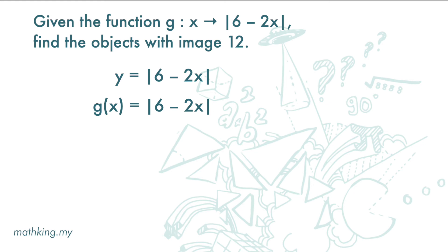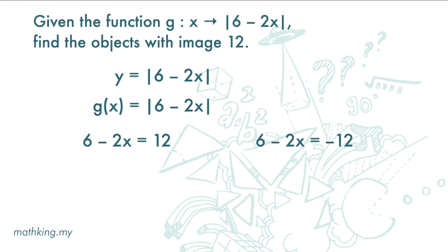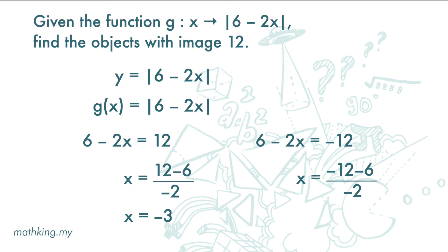This gives us two equations: 6 minus 2x equals 12, or 6 minus 2x equals negative 12. For the first equation, x is negative 3. For the second equation, x is 9. So the objects are negative 3 and 9.